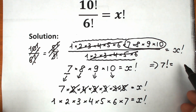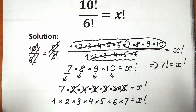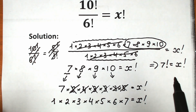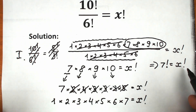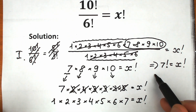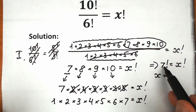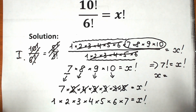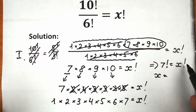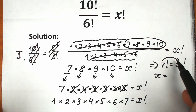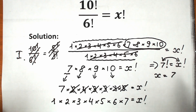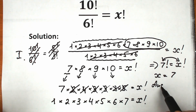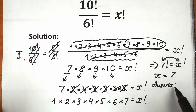So 7 factorial equals x factorial. A lot of students make a second common mistake here: they compute the exact value of 7 factorial, getting a huge complicated number. But we don't need to do that. Since 7 factorial equals x factorial, x equals 7. That is our solution.